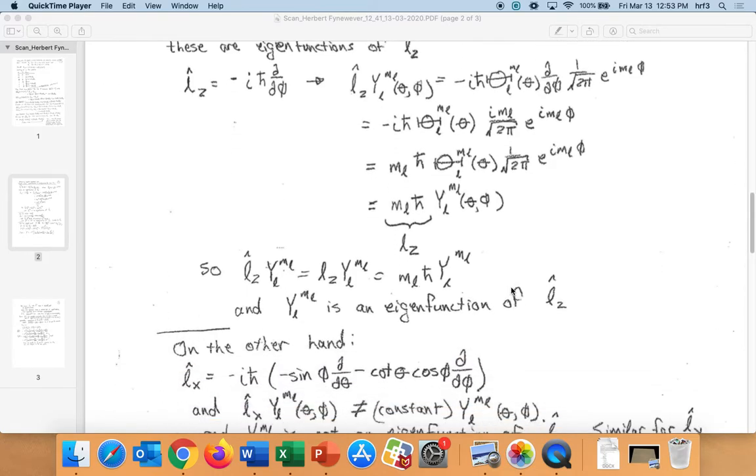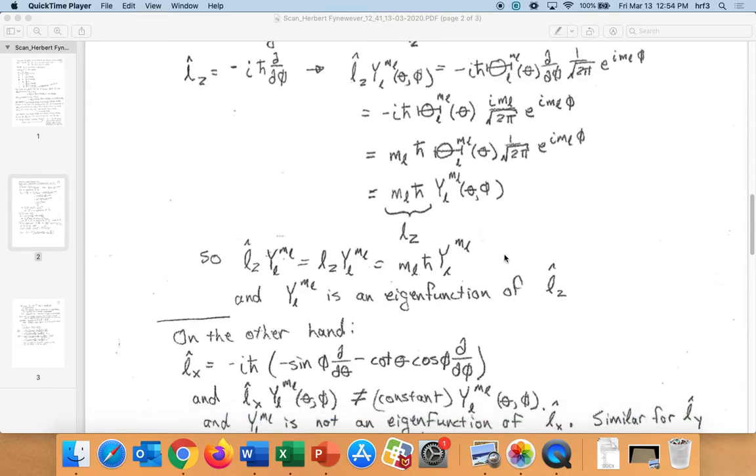So that's kind of cool. We can say L̂z, where this is the operator, is equal to Lz, where this is the eigenvalue. So then Lz is mLℏ, where this is the value of the eigenvalue. In other words, Lz equals mLℏ.